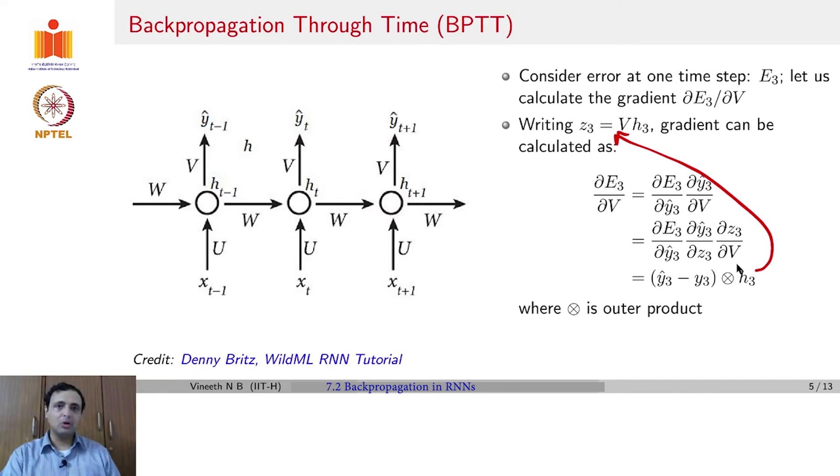This becomes the gradient for ∂E_3/∂V. You would sum up ∂E_3/∂V plus ∂E_2/∂V plus ∂E_1/∂V and so on and so forth to get the gradient of the overall error with respect to V. Once you compute that, you can update all the weights in V using gradient descent.